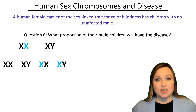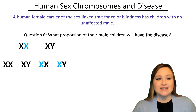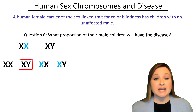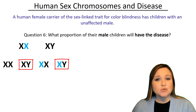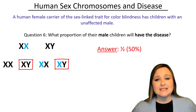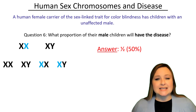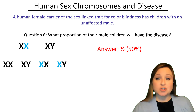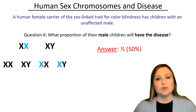Now here's question six: what proportion of their male children will have the disease? Looking at the male offspring possibilities, there are two: one option is that the male receives the normal gene from the mother on the X chromosome and the Y chromosome from dad — no colorblindness. The other option is that the mother passes along the X chromosome with the colorblindness trait, and dad passes along the Y chromosome — that individual would have colorblindness. So one out of two, or 50%, is the likelihood that male children will be colorblind. And no, it is not possible for males to be carriers of an X-linked gene, because males only have one X chromosome. If they receive the X chromosome with the affected gene, they will have the disease — they don't have a backup X because the Y chromosome is a separate chromosome.